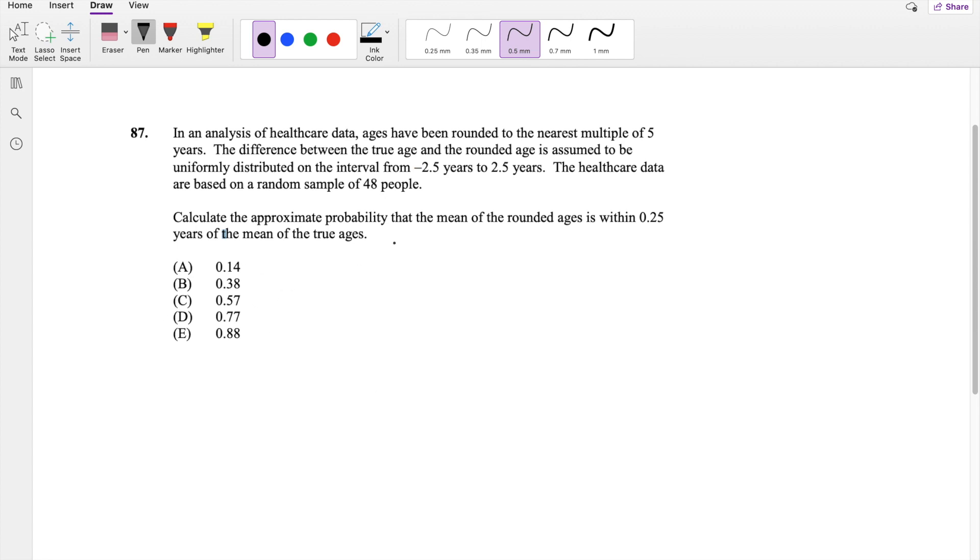So they ask you, calculate the approximate probability that the mean of the rounded ages is within 0.25 years of the actual age, so negative 0.25 to positive 0.25, right? So that's what they're asking for.